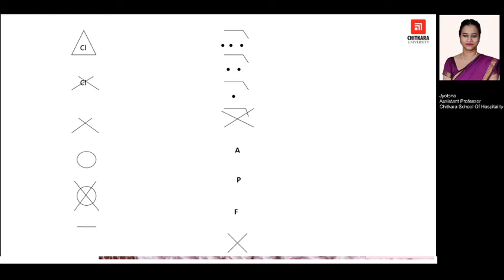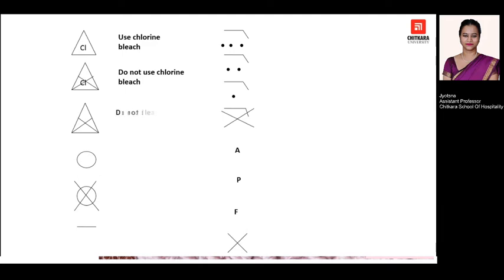For the triangle symbol, if it has the initial 'CL' written inside, it means you have to use chlorine bleach. If it has a cross mark, it means do not use chlorine bleach. If a triangle has a cross mark on the triangle itself, it means you do not have to use any kind of bleach on that product at all.